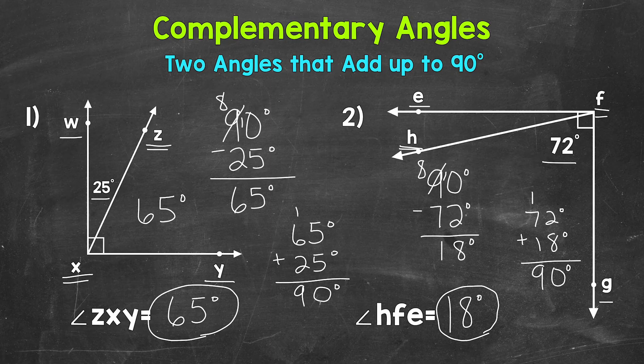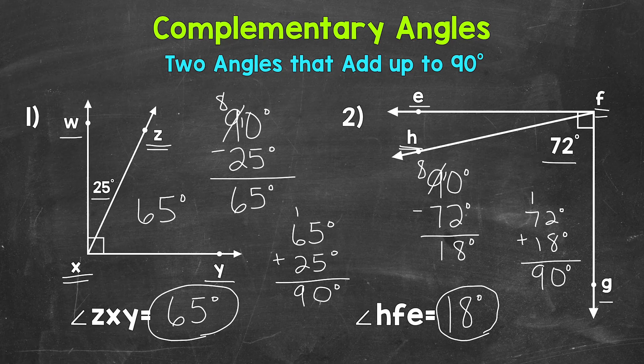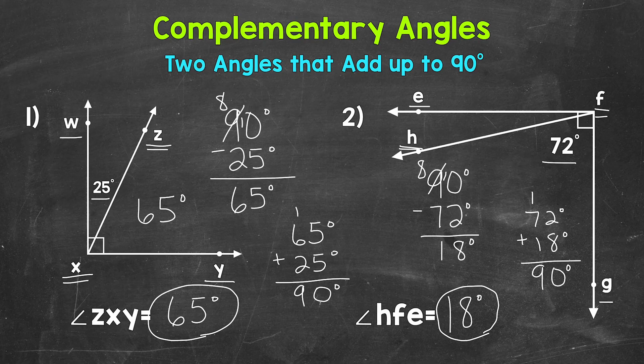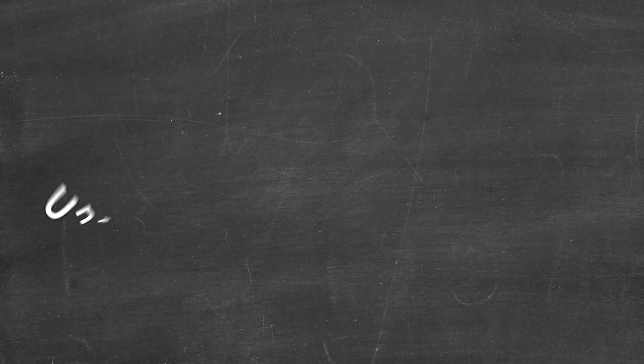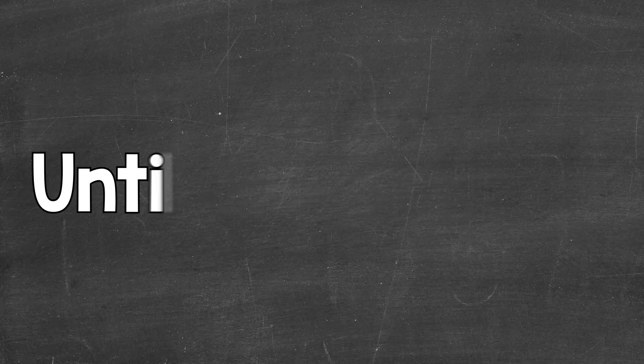So there you have it. There's an explanation of complementary angles. Remember, two angles that add up to 90 degrees. And then how we go about finding a missing complementary angle. I hope that helped. Thanks so much for watching. Until next time, peace.